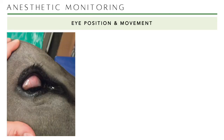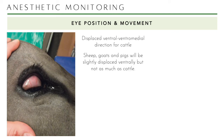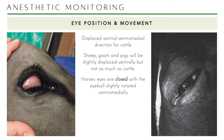Eye position and movement differ between species during anesthesia. In cattle, the eyes are dramatically displaced in a ventral to ventromedial direction — all you see is the sclera most of the time. Sheep, goats, and pigs also displace eventually but not as much. Horses are different: eyes are closed with the eyeball only slightly rotated ventromedially — you see just a small triangle of sclera at the lateral canthus. It is bad when the eye is centered, which means anesthesia is too deep; open palpebrae in horses is also a bad sign.